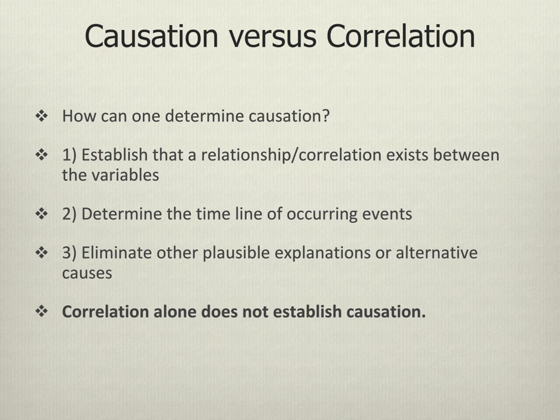Causation is very difficult to prove. In the first case, if one wants to establish that one variable is causing the other, one would first have to establish that there is a correlation between those two variables. Second, one needs to determine that there is a timeline of occurring events — that one always occurs before the other. Finally, you need to eliminate other plausible explanations or alternative causes. If you can do all of that, you can establish causation, but correlation alone does not make a hypothesis causal.